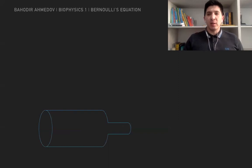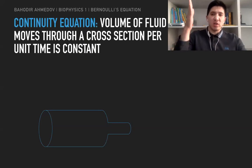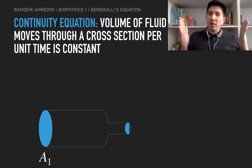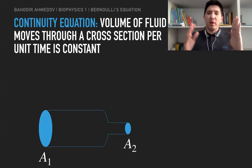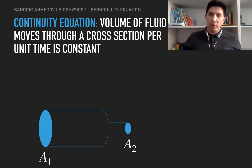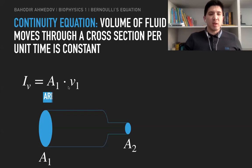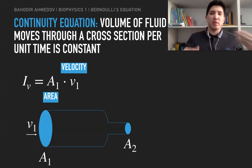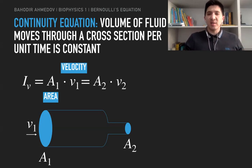If you remember, last time we talked about the continuity equation, which basically tells us that the amount of fluid passing through the cross-section area per unit of time is unchanged over the whole tube. For example, if I've got a tube with two different cross-section areas in the beginning and at the end, then even though the cross-section areas are different, the amount of fluid passing through this tube per unit of time is the same. So the volumetric flow rate, which is the amount of fluid per cross-section per unit of time, is found by multiplying the cross-section area by the velocity.